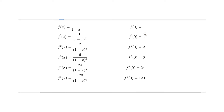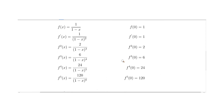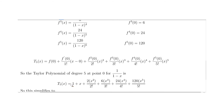Now we have the values of all our derivatives and we plug them into the Taylor polynomial formula. Substituting all the a's as zero, we have: f(0), first derivative of 0 times x, x squared, x cubed. The fifth derivative is 120, the fourth is 24, the third is 6, the second is 2, and both f(0) and the first derivative are 1.